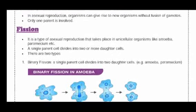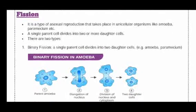The first topic under asexual reproduction is fission. The general meaning of fission is to break or split. In fission, a single cell or parent cell divides into two or more than two daughter cells. Based on this, fission is divided into two types.